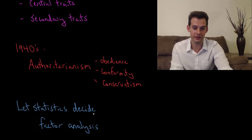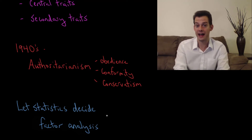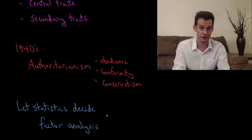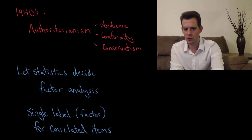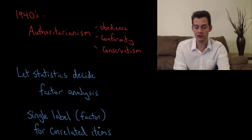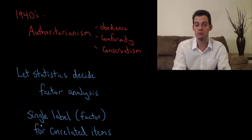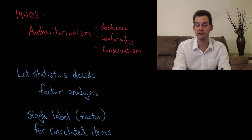In the case of intelligence we looked at many different skills and tried to pull out common factors from those skills, getting something like G for general intelligence. For personality, the idea is that we look at many items we've assessed — a large number of traits — and see if we can come up with a single label that refers to many correlated items. A factor is the label we have for referring to many things that are correlated.